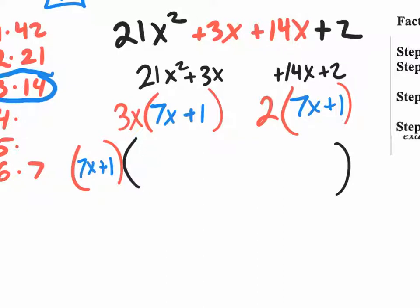Once again, I took the 7x plus 1 here and here and I pulled it out. So what's left over? The 3x is left over and the 2 is left over. Notice that I put a positive right there. That way it looks nice. If you don't put a plus, then it doesn't really make sense. So there's your answer.